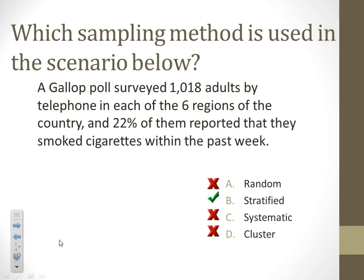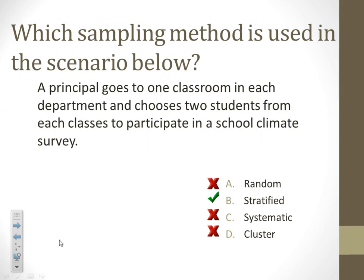Let's look at a few more examples just to make sure we've got it. We've got a Gallup poll that surveyed 1,018 adults by telephone in each of the six regions of the country. 22% of them reported that they smoked cigarettes within the past week. So this is a stratified sample because they divided them into the six regions. They wanted to make sure that they weren't all northerners, or they weren't all southerners, or they weren't all from California. They wanted to make sure that they equally represented the entire United States.